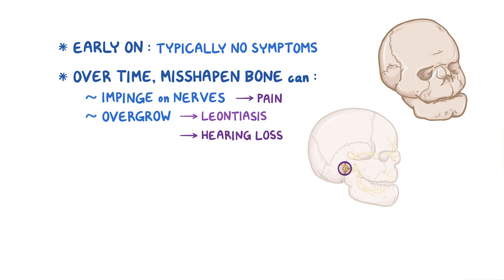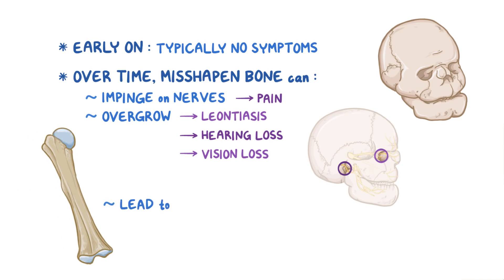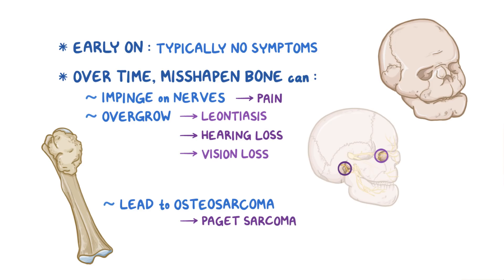If there's bony overgrowth that impinges on the optic nerve as it passes through the optic canal, that can lead to vision loss. Sometimes the accelerated bony growth can lead to genetic mutations that cause a bone cancer called osteosarcoma. When that happens, it's referred to as Paget's sarcoma.